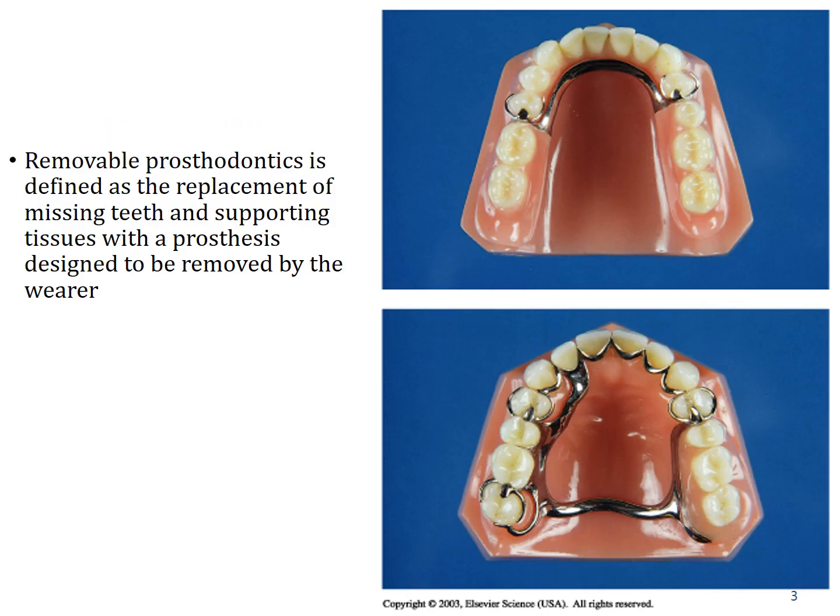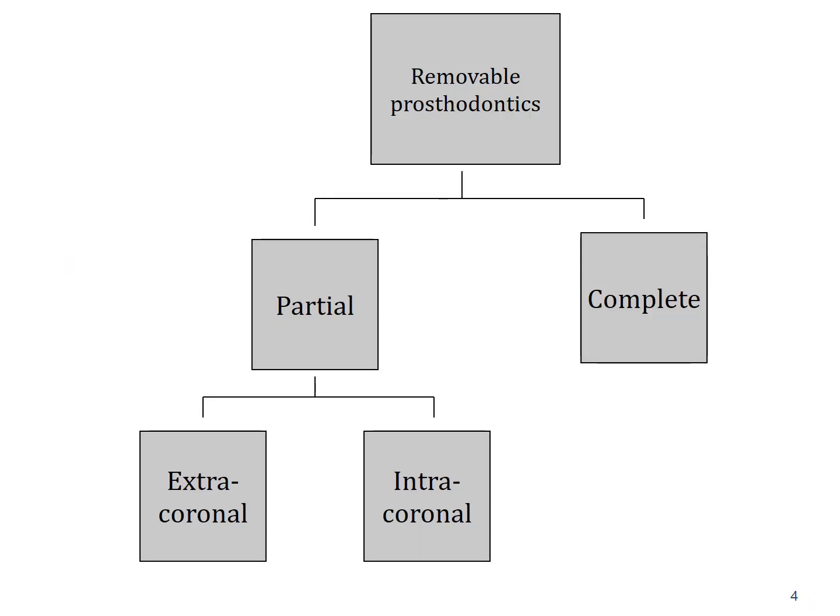Removable prostheses are defined as a replacement of missing teeth and supporting tissues with prostheses designed to be removed by the wearer, that is the patient. Here you can see removable prostheses, specifically a cast partial denture for the lower arch in Kennedy's Class 1, and another CPD for Kennedy's Class 2 modification 1. This has a cast partial denture with a metal framework and resin base over the missing teeth area.